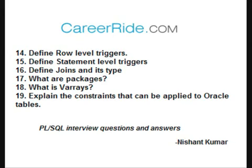Explain the constraints that can be applied to Oracle tables. Oracle constraints are used to maintain the integrity of data. The different types of constraints include: Check constraint, Not Null constraint, Primary Key constraint, and Unique constraint. Check constraint specifies a condition for a row. Not Null constraint specifies that a column cannot accept null values. Primary Key constraint ensures each row is identified by a unique key. Unique constraint ensures no column value has repetitive values.